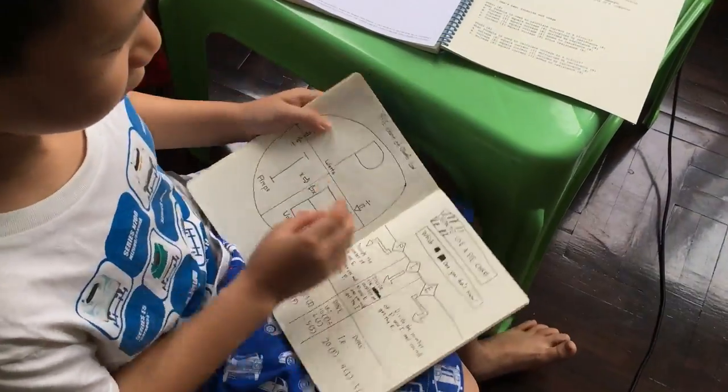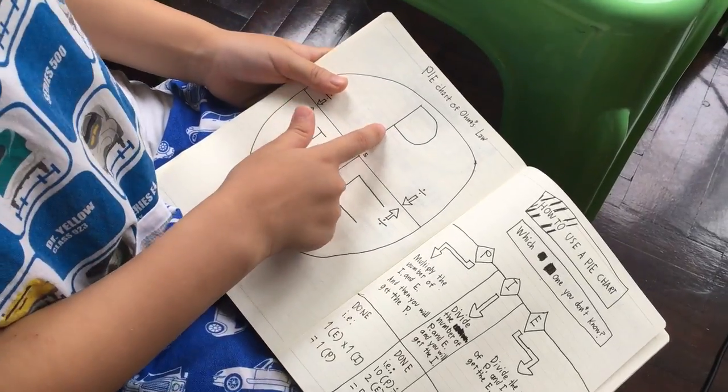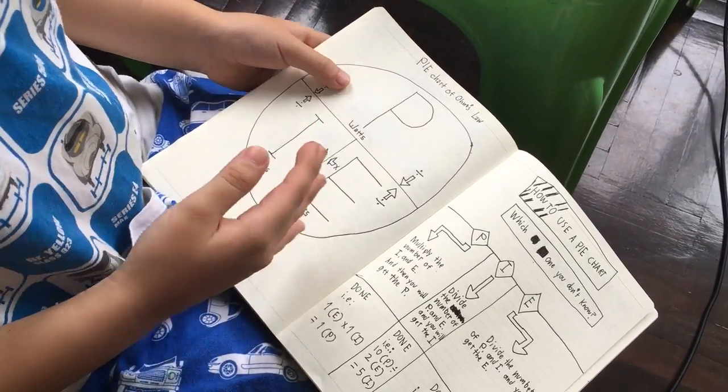I'll try and tell you. Here, this is a pi chart, okay? It's divided into three parts. P, understand it simply as power, is watts.